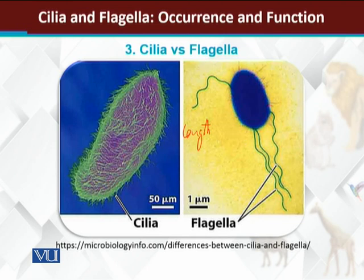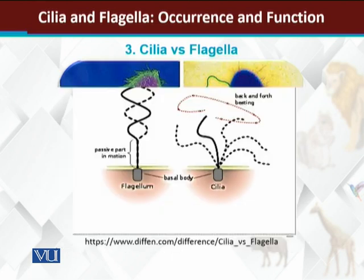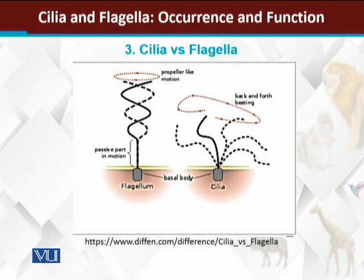A very important difference between cilia and flagella is their method of locomotion. Cilia move in a forward and backward stroke — a back-and-forth motion — which provides a smooth, coordinated wave of movement.